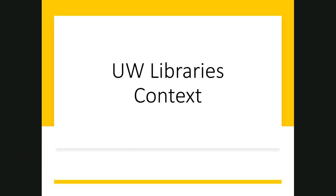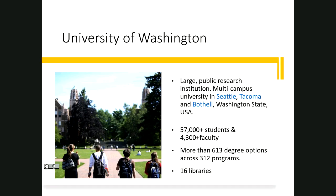A little bit about the University of Washington: we're a large public research institution, a multi-campus university located in Seattle, Tacoma, and Bothell in Washington state on the west coast of the U.S. We have around 57,000 students and over 4,000 faculty or instructors, more than 613 degree options across 312 different academic programs, and 16 libraries spread across those campuses.